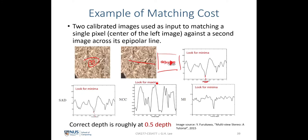For normalized cross-correlation, we look for the maxima. In this example with highly repetitive texture, the maxima point is not very distinctive compared to other points, meaning the method could easily confuse the depth computation — this is the known weakness of NCC for repetitive structures. The last example is the cost given by mutual information, which performs best here because its probabilistic formulation produces a very clear global minimum even for this highly repetitive image.